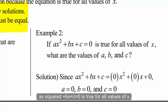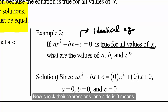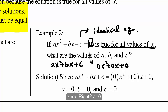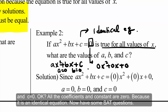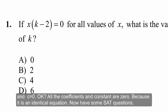Example two: if ax² + bx + c = 0 is true for all values of x, that means this equation is an identical equation. The right-hand side is 0, which can be written as 0x² + 0x + 0. So comparing both sides: ax² + bx + c = 0x² + 0x + 0. Therefore a = 0, b = 0, and c = 0.